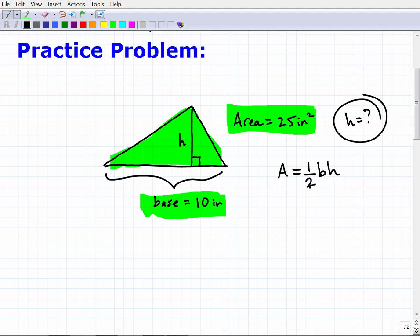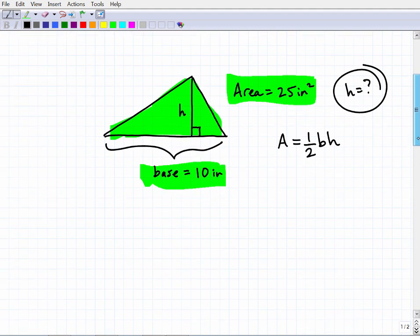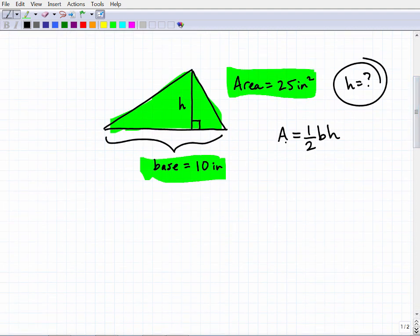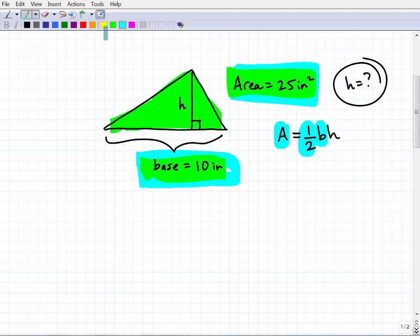We're going to need the formula, and now with this, you're going to need some basic algebra skills. So here we know what information? Well, we know the area because it's given to us right here. We know the base. One half is just a value, and what I'm looking for is the height. So we're going to plug in some information and then we're going to have to solve for this missing variable.